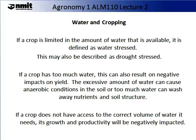So now we have explored rain, rainfall, rainfall variability, rainfall seasonality and annual percentile. What do we need to know about water and cropping? If a crop is limited in the amount of water available, it is defined as water stress, also described as drought stress. If a crop has too much water, this can result in negative impacts on yield. The excessive amount of water can cause anaerobic conditions in the soil, or too much water can wash away nutrients and soil structure. Both of these impact negatively on yield. If a crop does not have access to the correct volume of water it requires for growth and productivity, it will be negatively impacted. The amount of rainfall and water available in the soil equals the amount of water available to the crop. Humidity can also impact on this relationship.